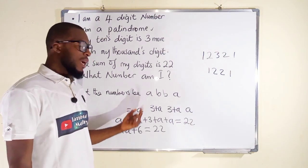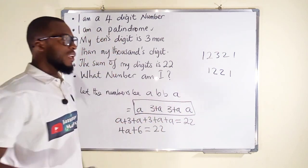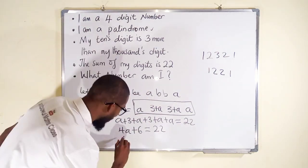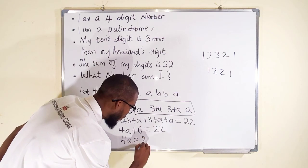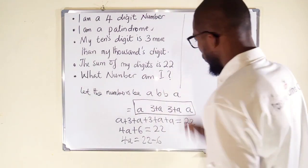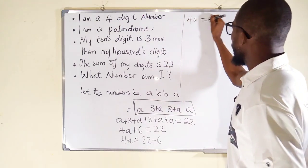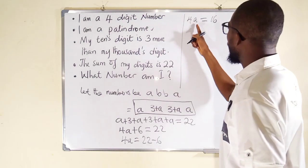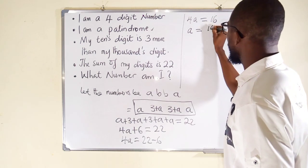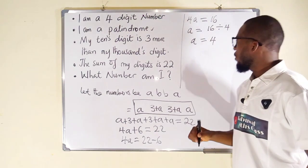We are going to solve for A and substitute back. Taking positive 6 to the right, it becomes negative: 4A = 22 − 6. So 4A = 16. To find A, we divide both sides by the coefficient of A, which is 4: A = 16 ÷ 4. Therefore A = 4.